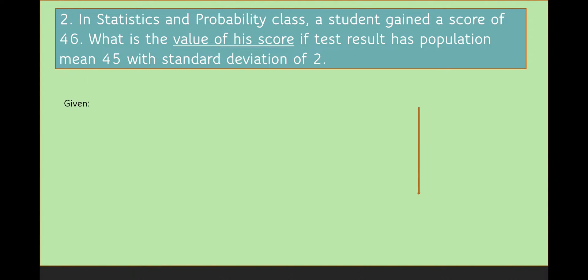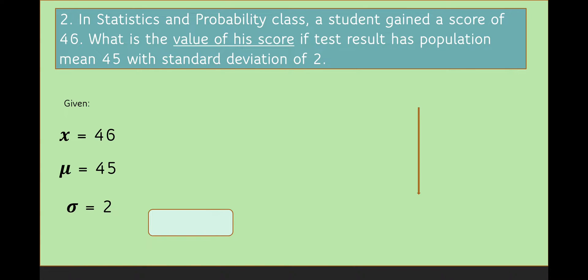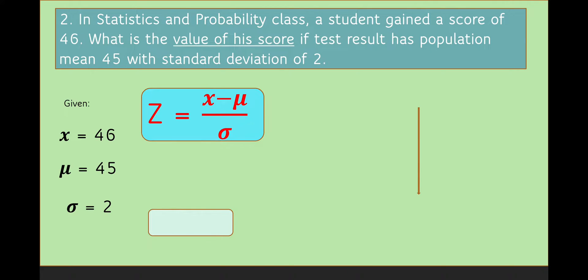Given in the problem: x is equal to 46, which is the raw score; mean is 45; and standard deviation is 2. Using the formula and finding the z-score, substituting the value of x which is 46 minus mean 45, divided by standard deviation 2. So 46 minus 45 is 1, divided by 2, is equal to 0.5. The value of z is equal to 0.5.